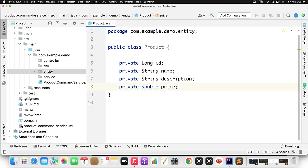Create the controller class, annotate it with @RestController and @RequestMapping for the root URL '/products'. Inject the ProductQueryService. Define a GET endpoint called fetchAllProducts that calls service.getProducts(). Configure the data source properties in the application.properties — copy from the command service and change the port to 9292 for the query service, while the command service runs on 9191.